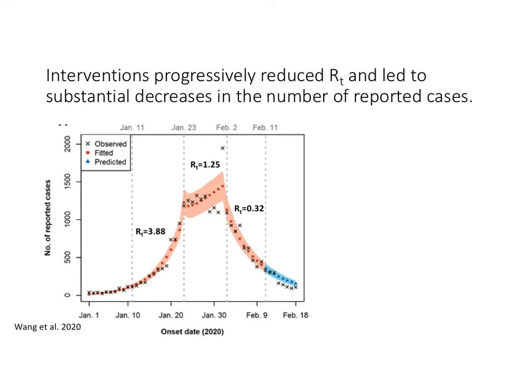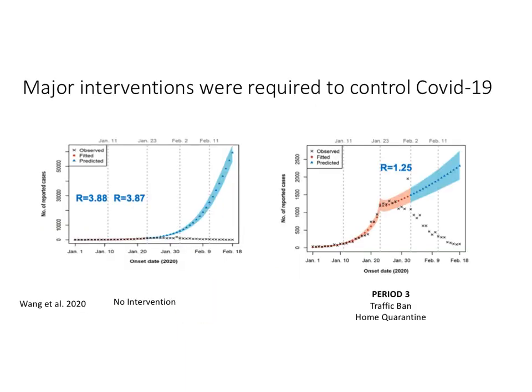Using this model they developed a very good fit to the observed number of cases in Wuhan across all four periods — Period 1, Period 2, Period 3, and Period 4. The fitted data closely matched the observed data, and they confirmed that the effective reproduction number changes over the course of time.